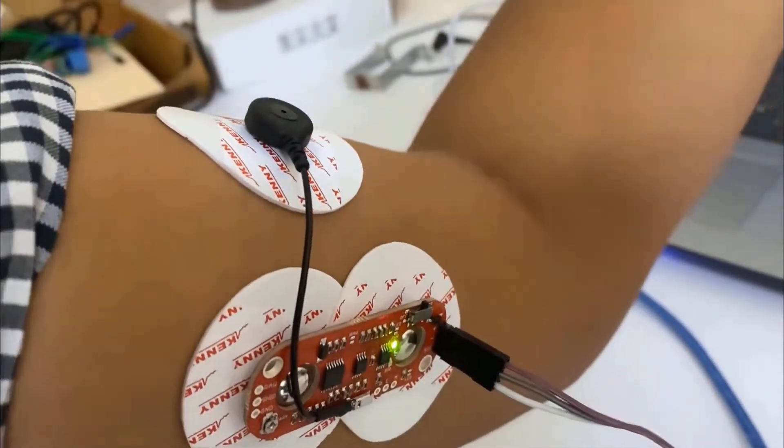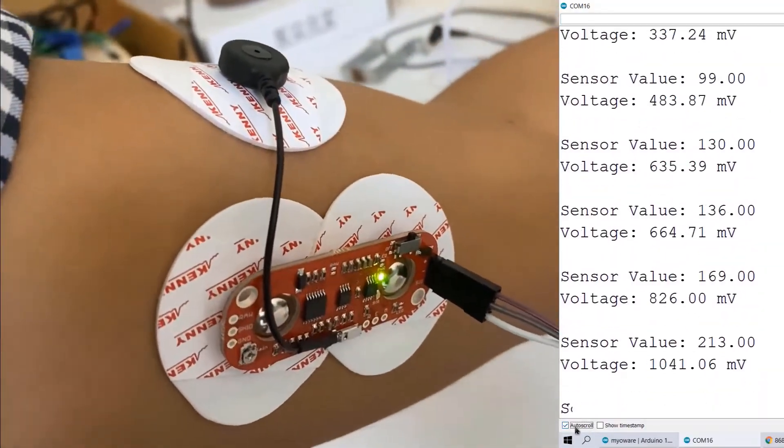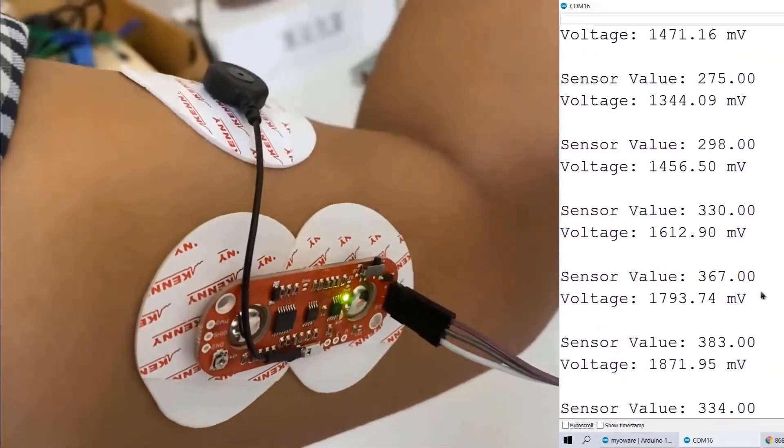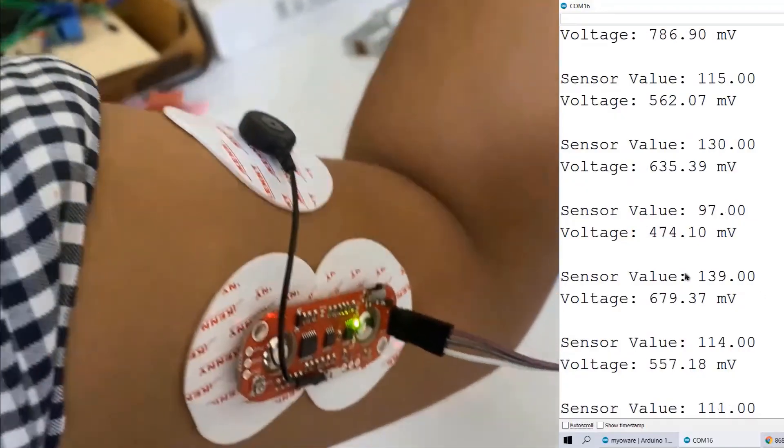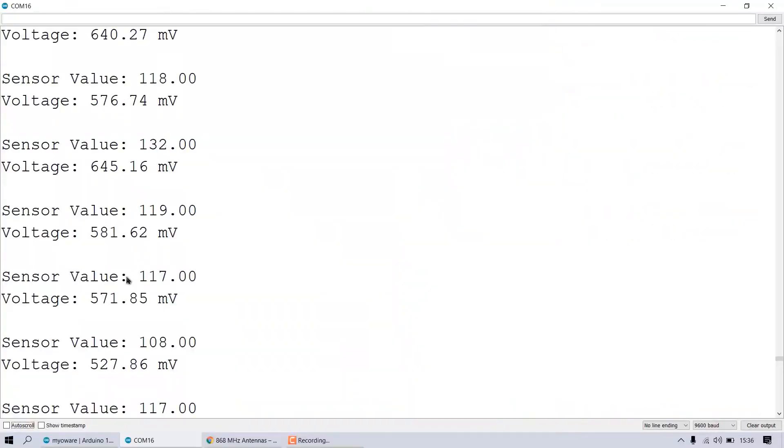Now, to check the working of the sensor, you can expand or contract your muscle as you want. Simply stretch the muscle as shown here. So, you will see a lot of variation in voltage depending upon the bending of the arm.